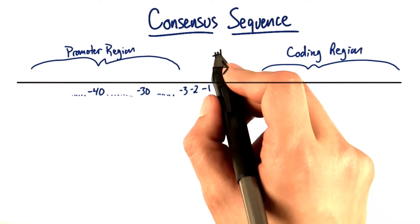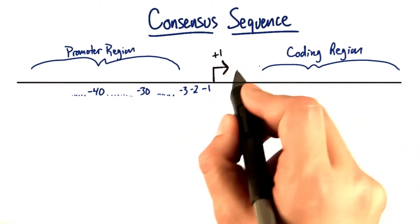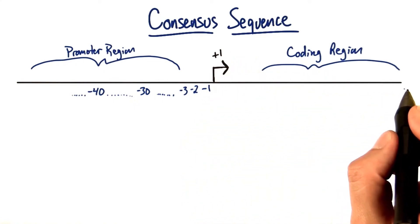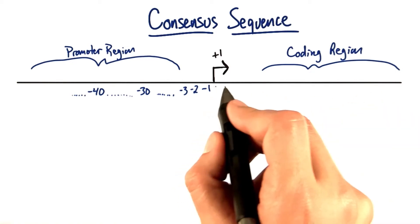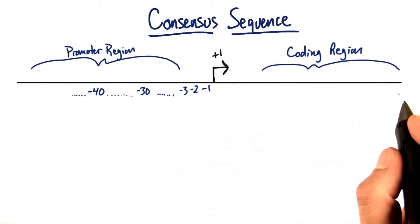we have the promoter region. In the same way that we would start counting plus one, plus two, plus three down our coding region, and that would start measuring, counting the number of letters that are going to be in our mRNA transcript.